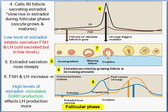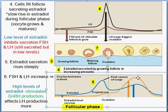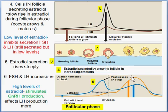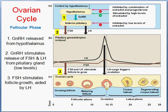If fertilization occurs, progesterone and estradiol will continue to be released. If it does not occur, the corpus luteum degenerates, and the production of progesterone and estradiol stops — you can see it drop on the chart. When that stops, the negative feedback holding back GnRH is released, and GnRH starts being secreted again from the hypothalamus to the anterior pituitary, releasing FSH and LH, and the cycle starts all over again.